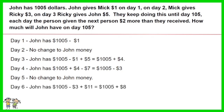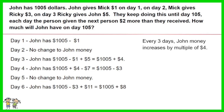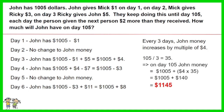On day six, John has $1005 minus three dollars plus eleven dollars, which equals $1005 plus eight dollars. Based on the six-day trend, we can see that every three days John's money increases by a multiple of four dollars. 105 days divided by three days equals 35. Thus on day 105, John's money equals $1005 plus 35 sets of four dollars, which equals $1145.